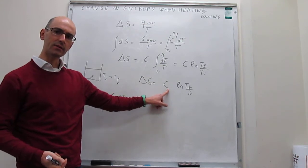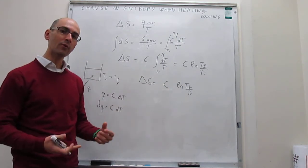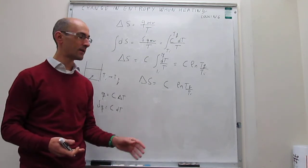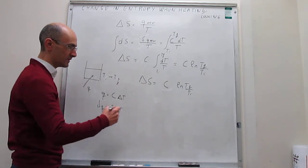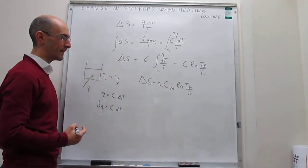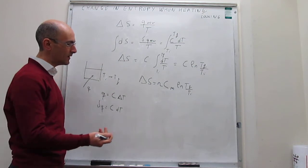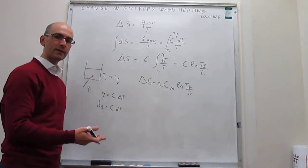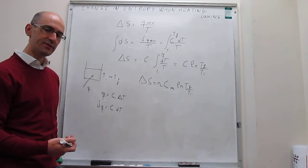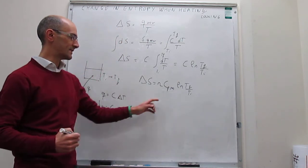That is the final expression for the change in entropy when heating or cooling a system: C times the natural log of the ratio of temperatures. We rarely use the extensive heat capacity. When working with molecular systems, we always like to use the molar version of this expression, or perhaps the specific heat capacity. Here we will use the molar version, which means the number of moles of the substance multiplied by the molar heat capacity. We also know that heat capacity depends on whether you are working at constant pressure or constant volume, so this molar heat capacity will be Cp,m — the molar heat capacity at constant pressure.